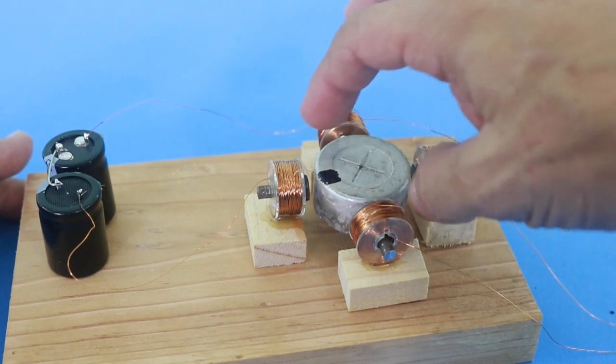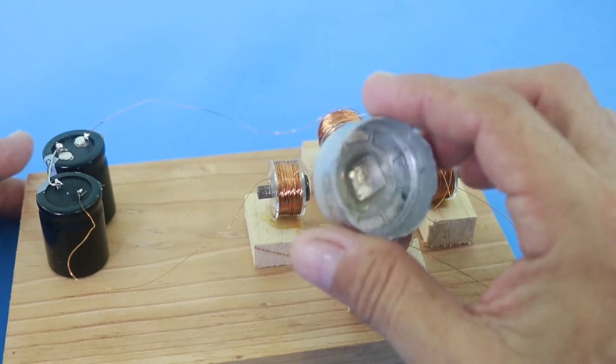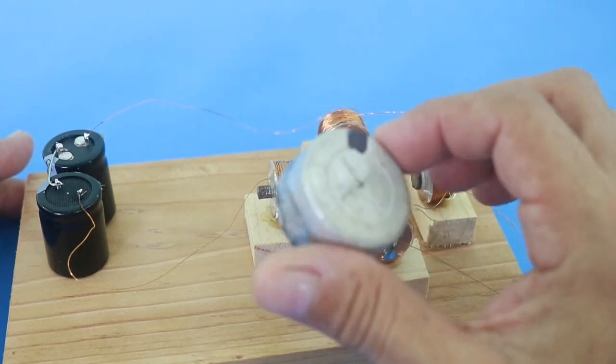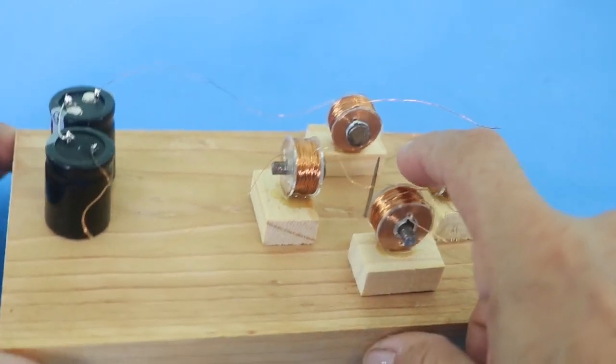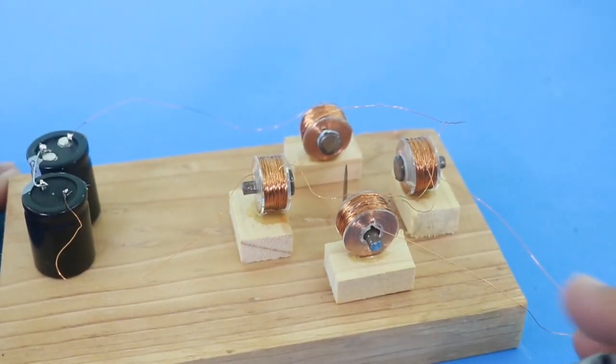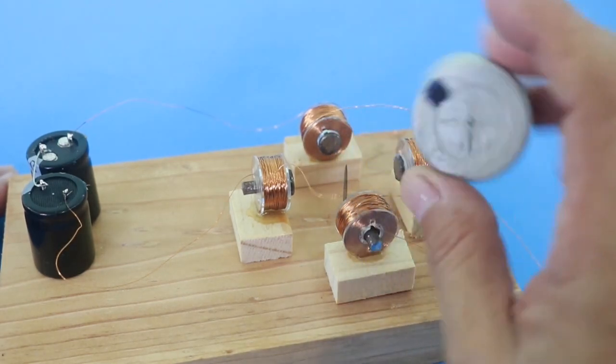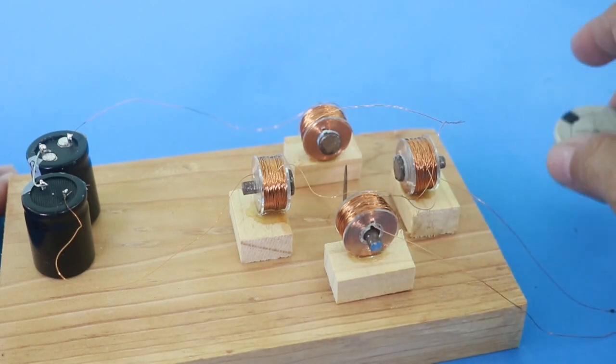The rotor is a piece of aluminum from a large electrolytic capacitor and it rests on this nail here to reduce friction and so that it can rotate freely.